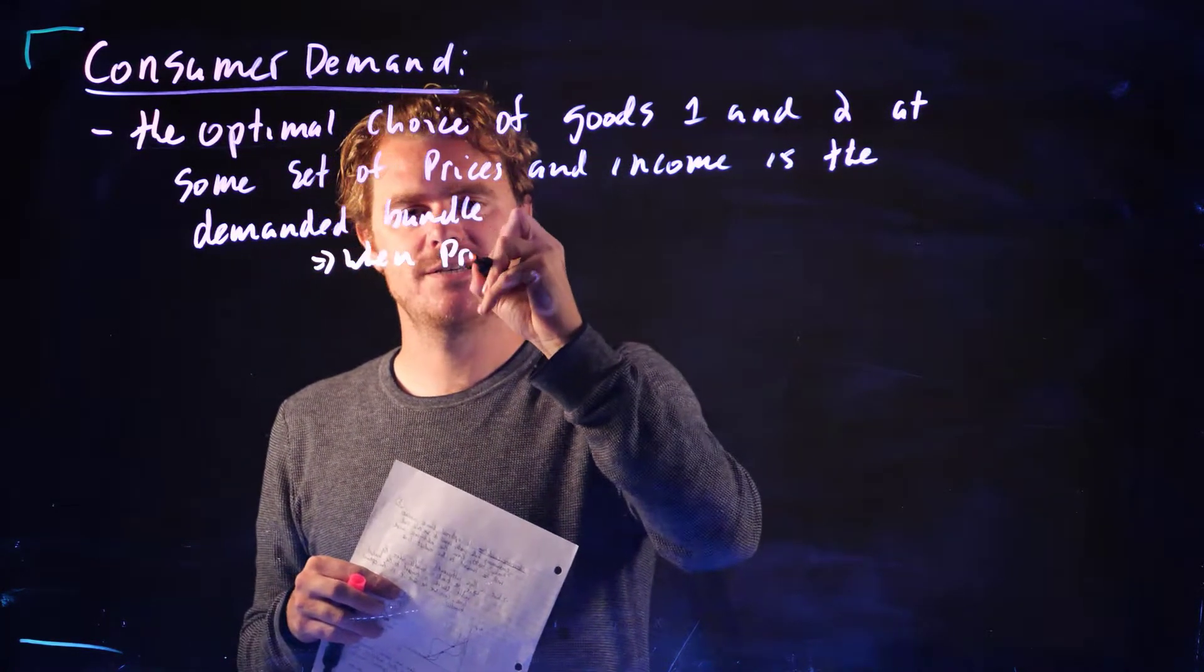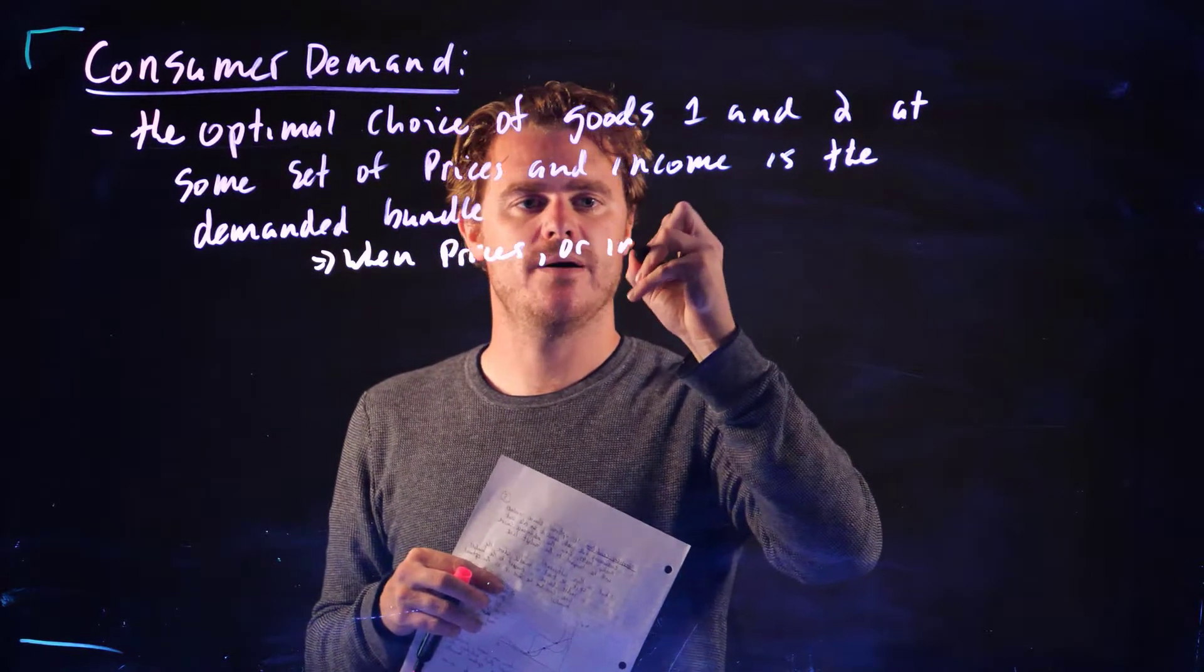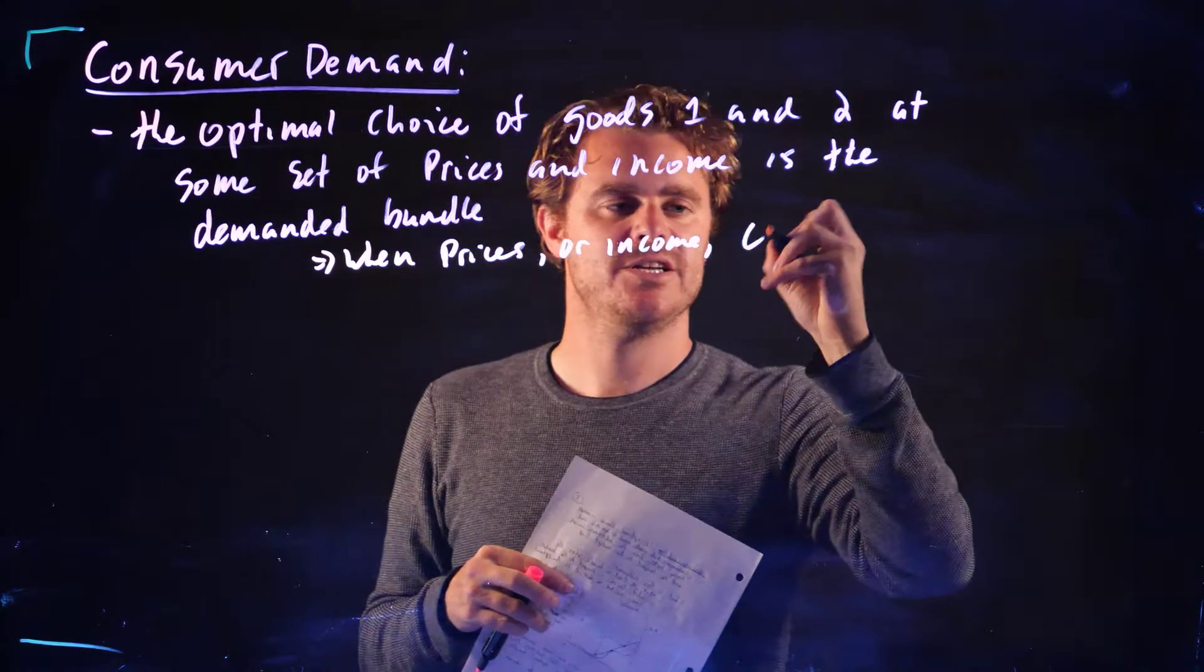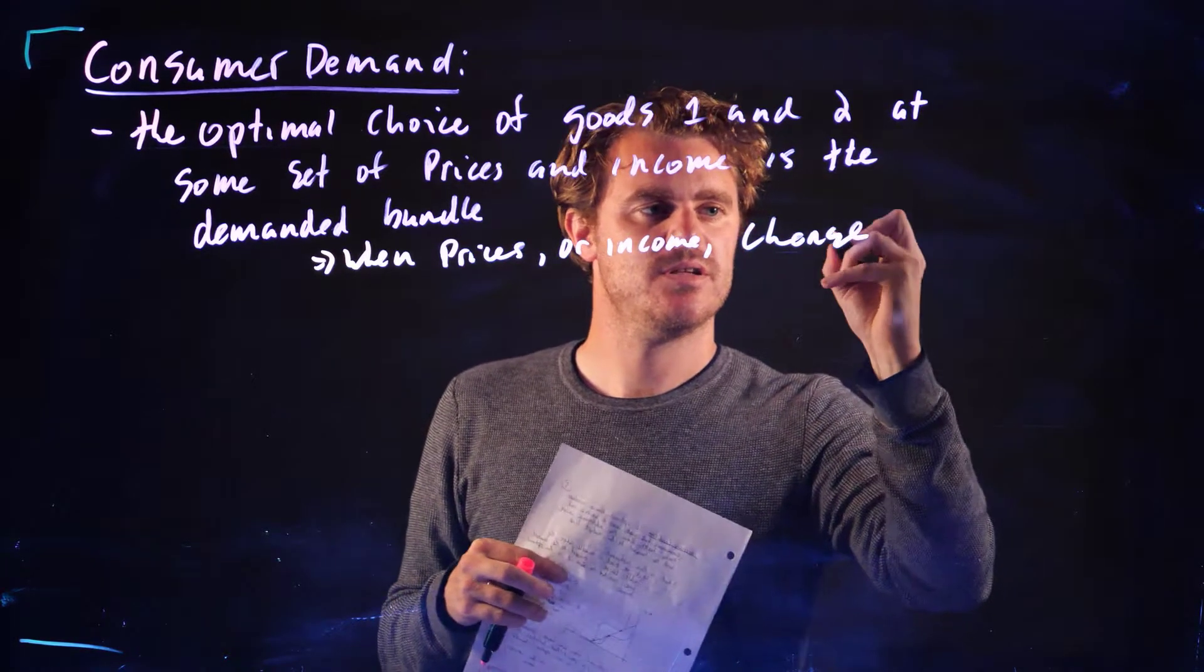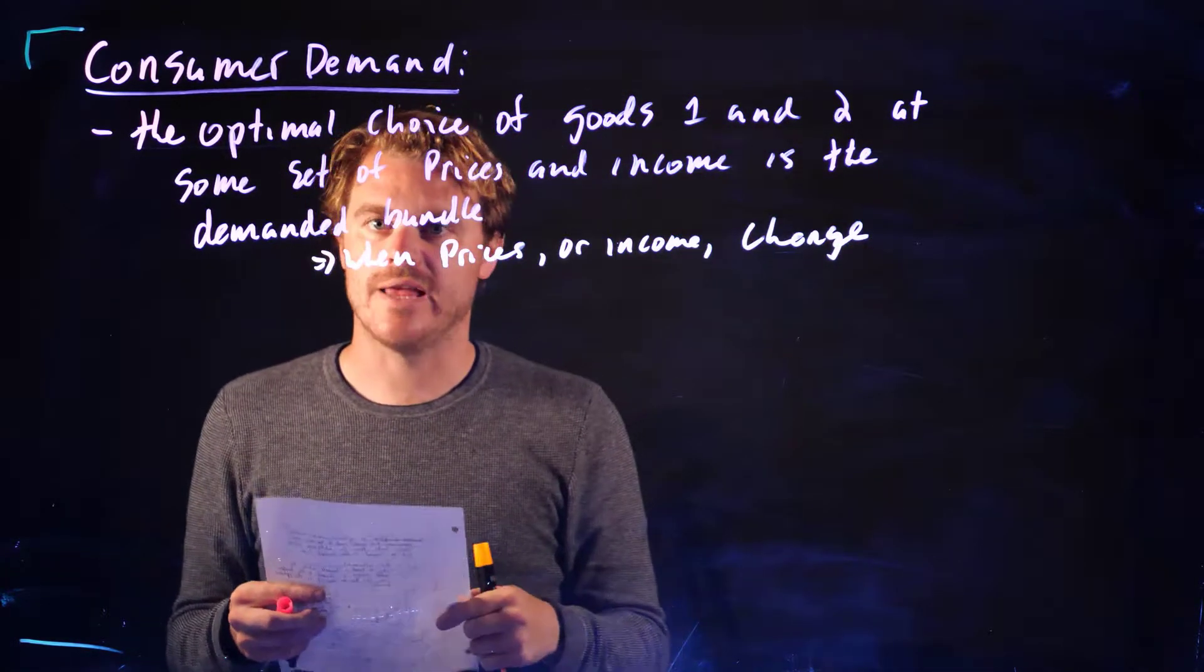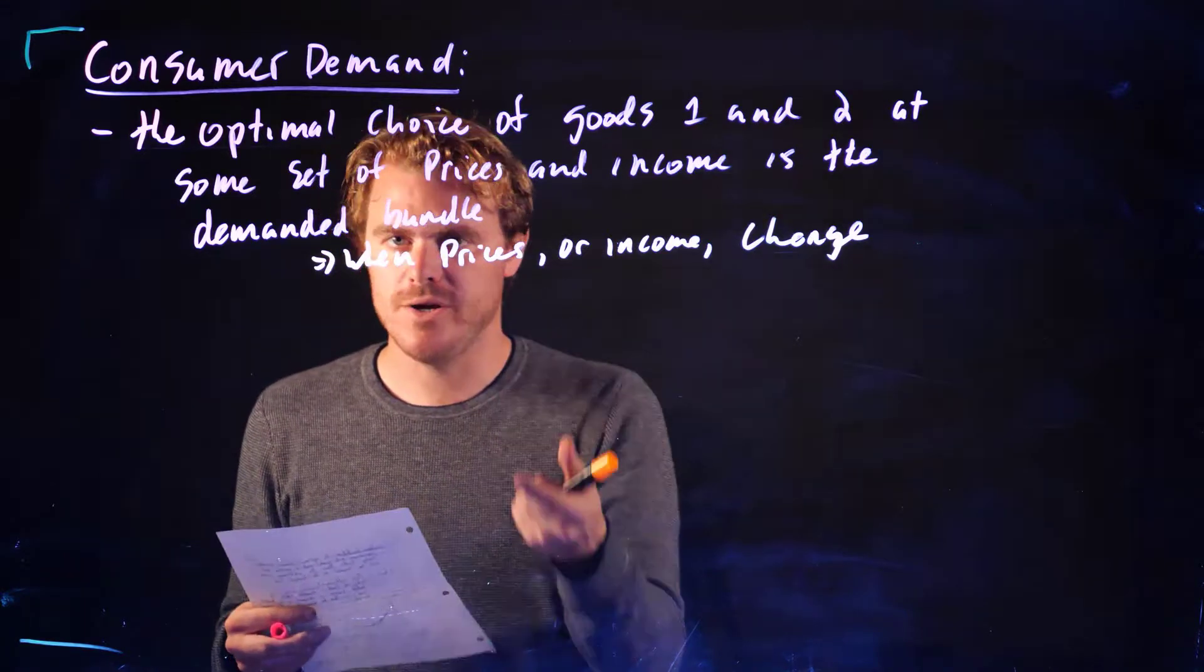When prices or income change, this optimal choice, this x1 and x2 star, are likely to change. So the demanded bundle is going to change.